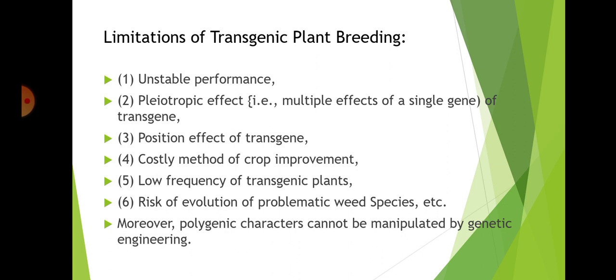There is also criticism against genetically modified crops. First is unintended harm to other organisms: a laboratory study published in Nature reported that pollen from BT corn caused high mortality in monarch butterfly caterpillars. Monarch caterpillars consume milkweed plants, not corn, but pollen from BT corn can be blown by wind into neighboring milkweed plants and the caterpillars could eat the pollen and perish. Although the study was not conducted under natural field conditions, the results seem to support this concern.